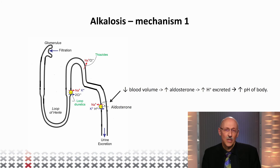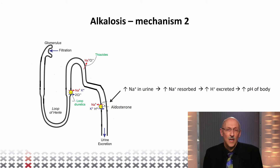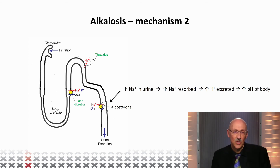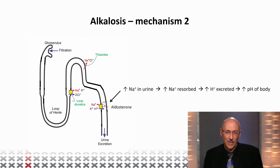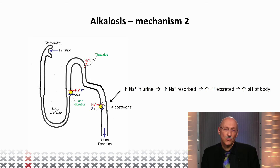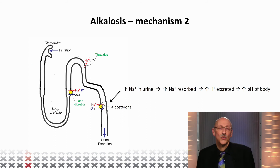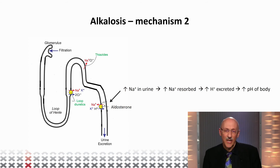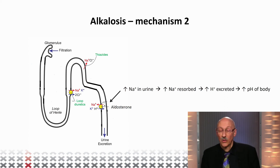That means you have an increase in the secretion of protons, and that means your blood pH will go up. Additionally, because this system is influenced by aldosterone, it is also triggered when the kidneys notice that secretion of sodium has increased. The kidneys try to absorb as much sodium as possible, and that means exchange for protons again occurs — and again in this mechanism, the pH of your blood goes up.